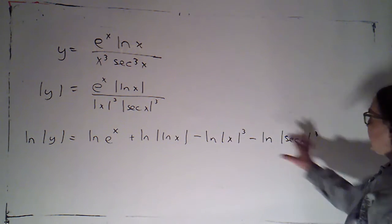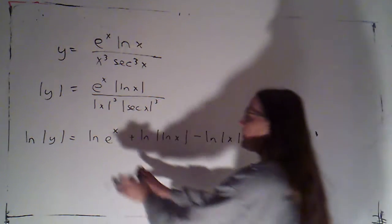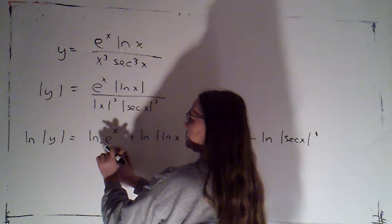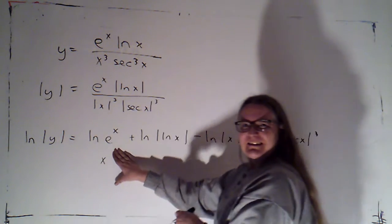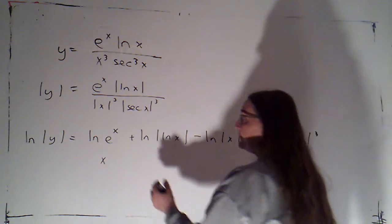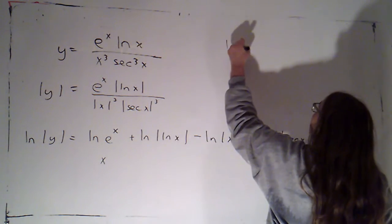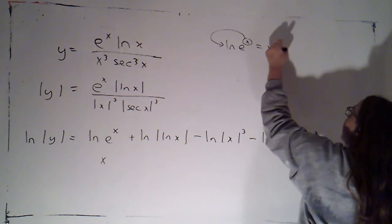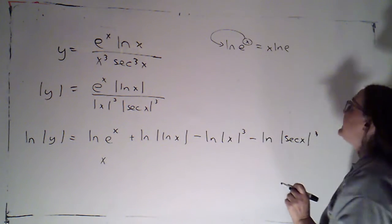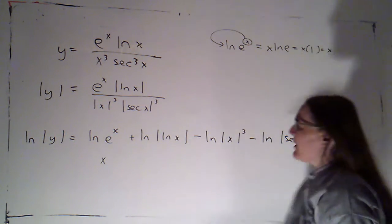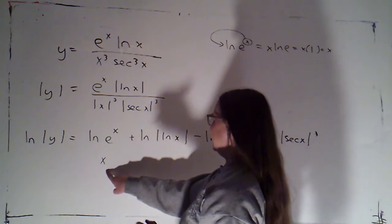And then I'm going to go ahead and use my power rule. Now here, I can think of this one of two ways. I can either just say, hey, the natural log of e to the x, that's just x. That's a composition of inverse functions. If I prefer, I can say the natural log of e to the x, I can apply that power rule. And that's x times the natural log of e. But the natural log of e is just one. Either way, this piece is going to simplify to x.